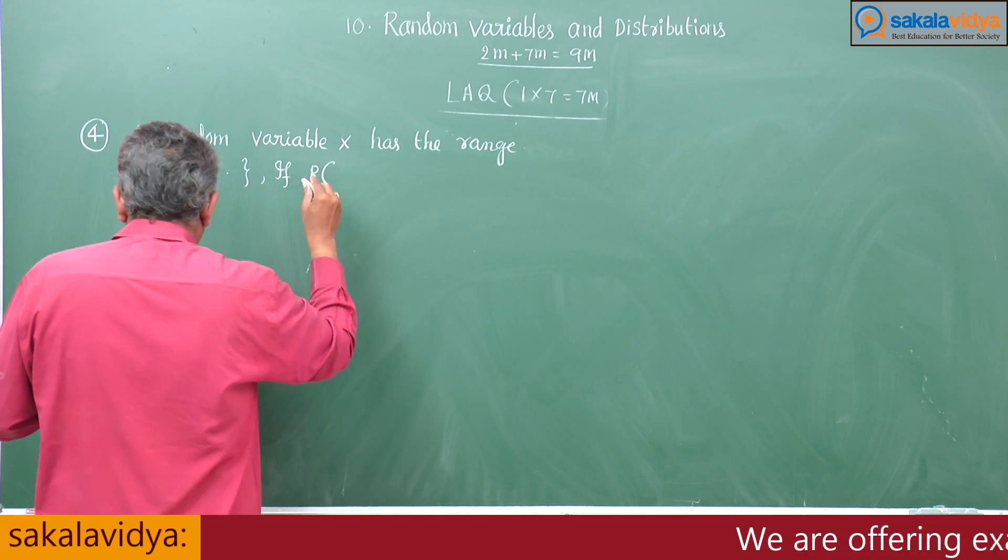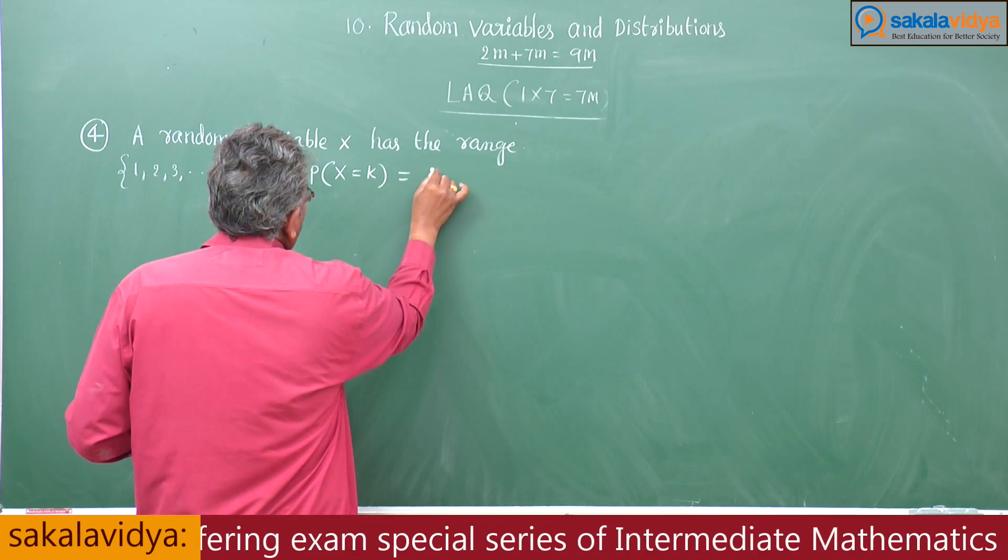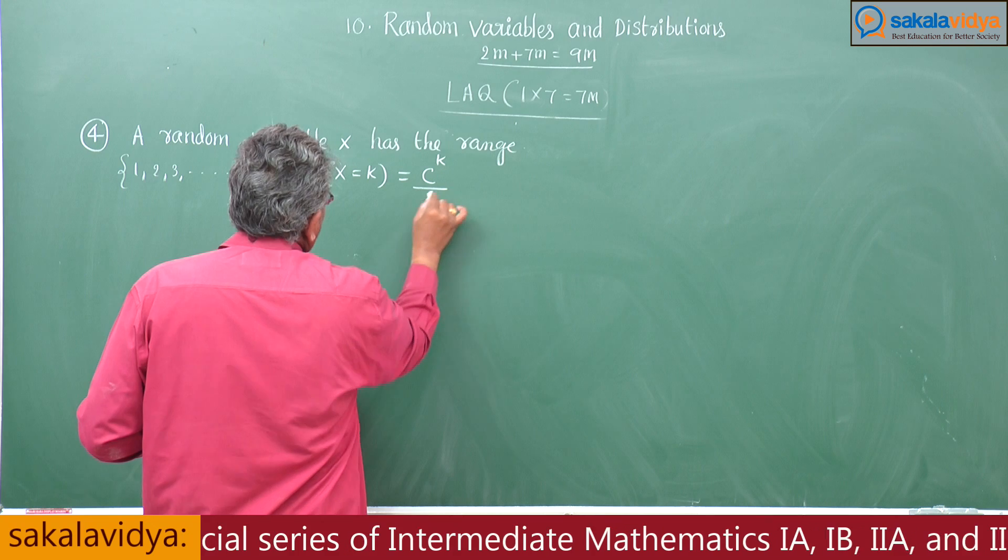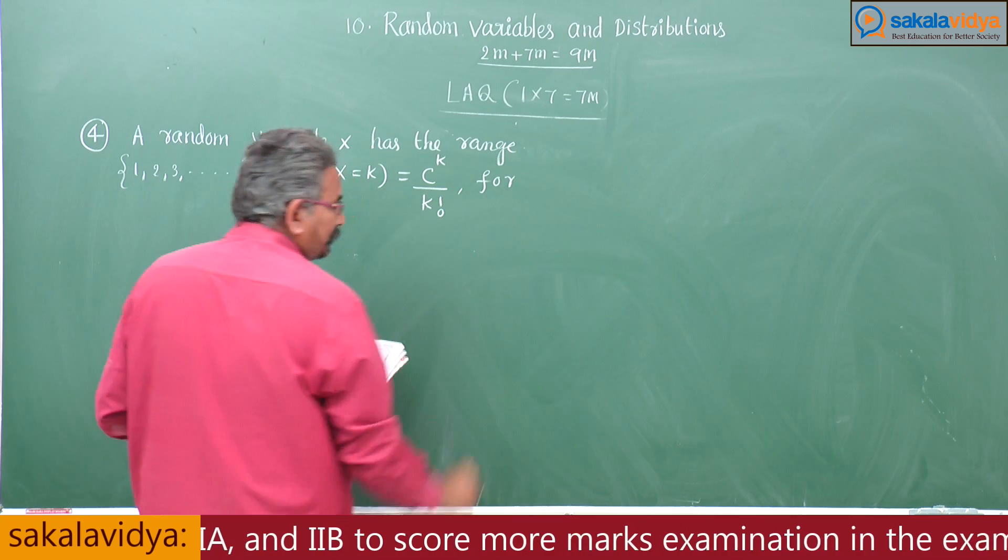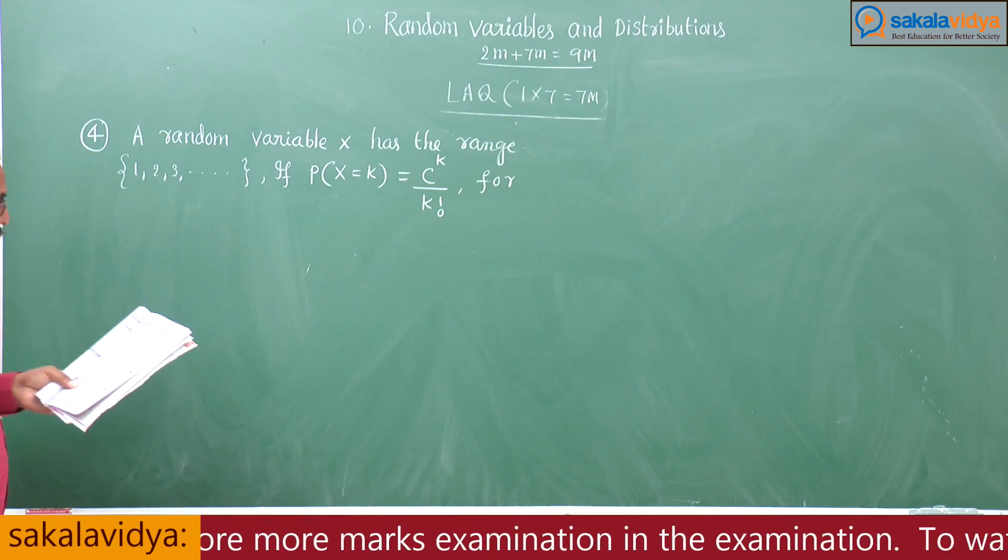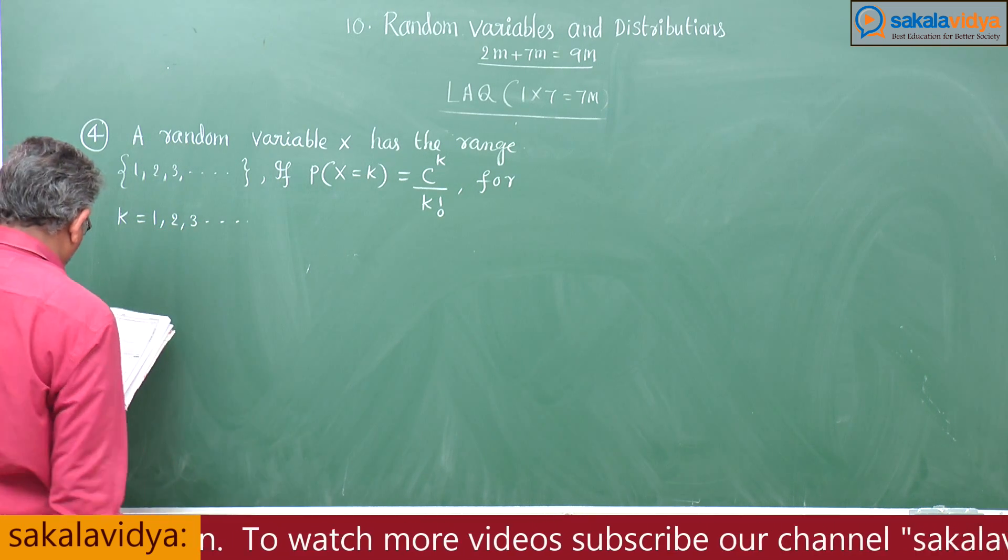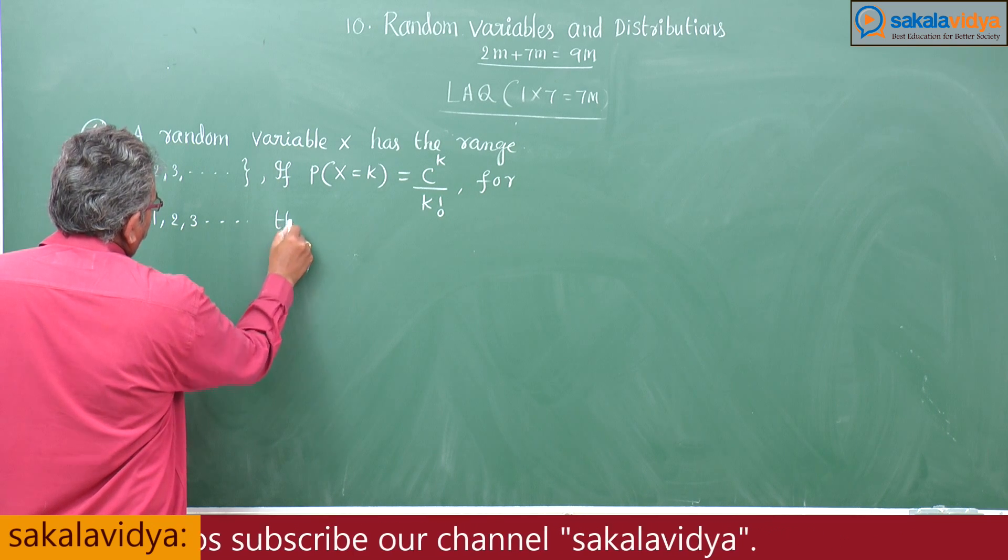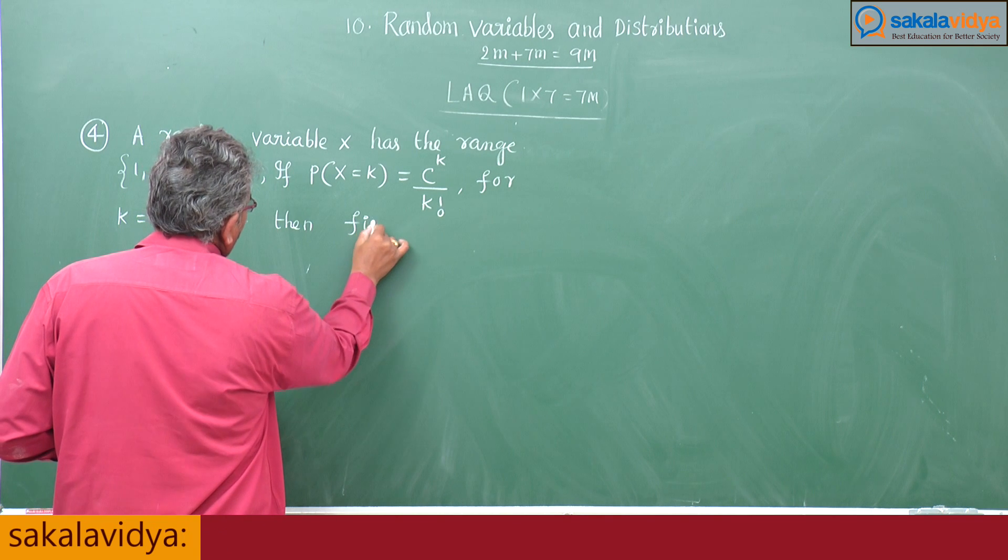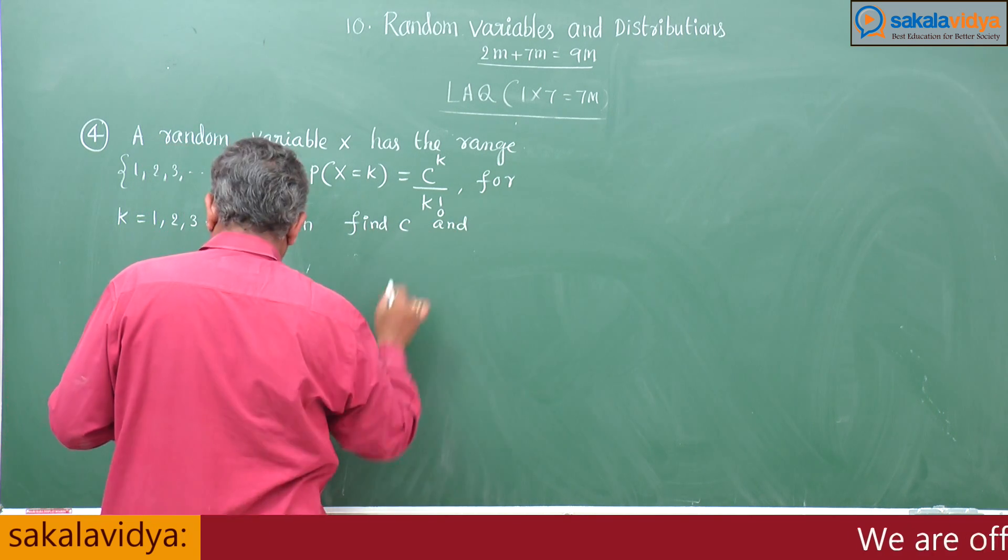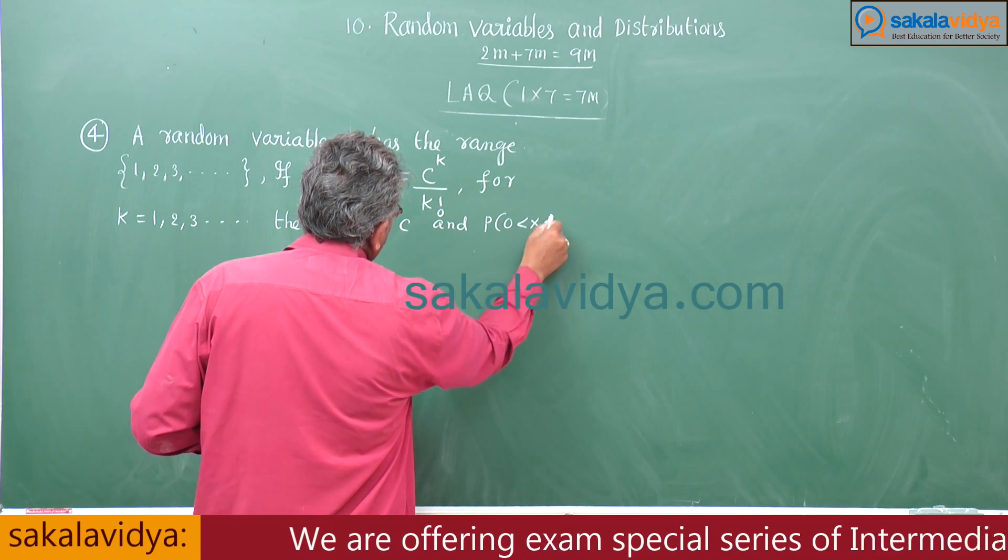If p of x is equal to k is equal to c power k by k factorial for k is equal to 1, 2, 3, and so on, then find c and p of 0 less than x less than 3.